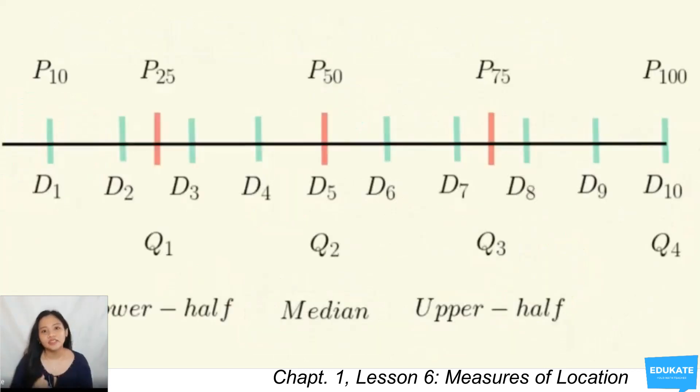Your quartile, decile, and percentile can be illustrated as this. For the quartile, recalling the definition, it is a measure of location that divides the data set into four equal parts. As shown here, you have quartile 1, quartile 2, quartile 3, and quartile 4, denoted as Q1, Q2, Q3, and Q4.